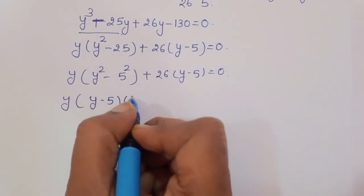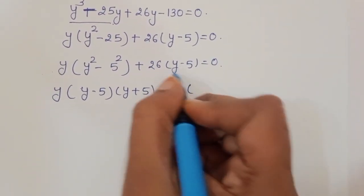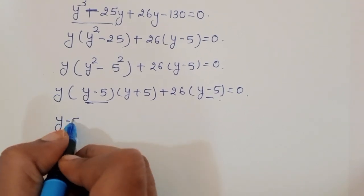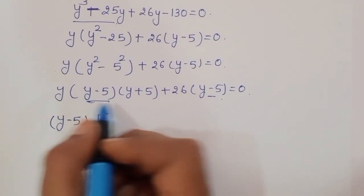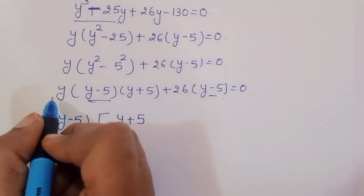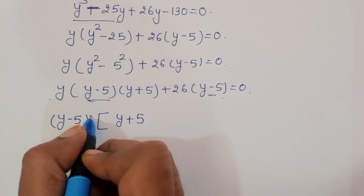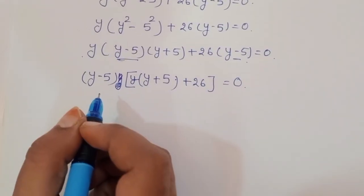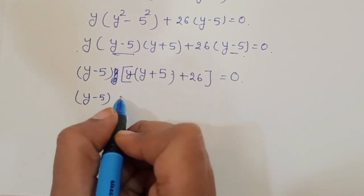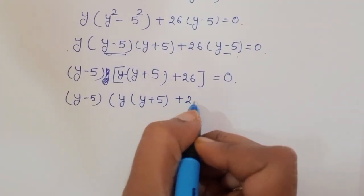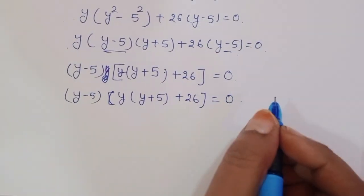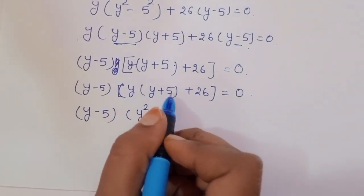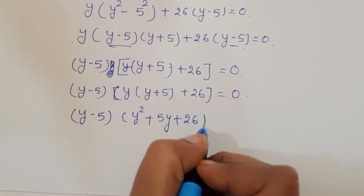So we can write: y minus 5 times y plus 5, plus 26 times y minus 5 is equal to 0. Taking y minus 5 as common, we get y minus 5 times the quantity y squared plus 5y plus 26 is equal to 0.